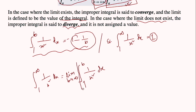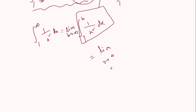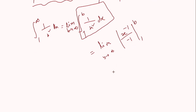This integral from 1 to b is now a proper integral, so we can evaluate it. We write limit as b tends to infinity. Integrating 1/x² = x⁻², we get x⁻¹ divided by negative 1, evaluated from 1 to b. Simplifying, this equals the limit as b tends to infinity of −1/x evaluated from 1 to b.